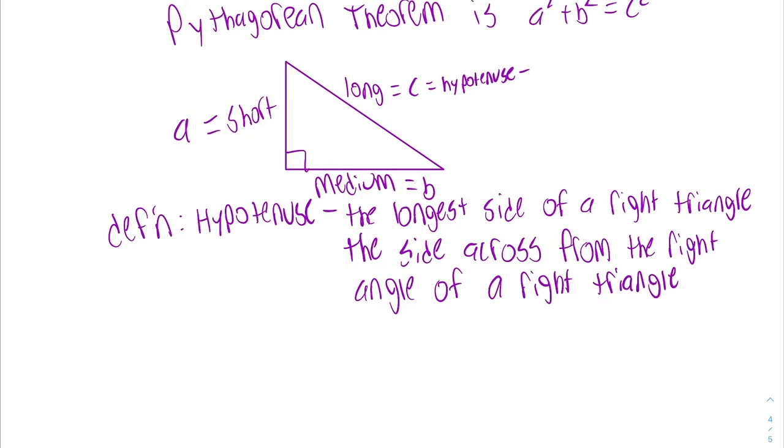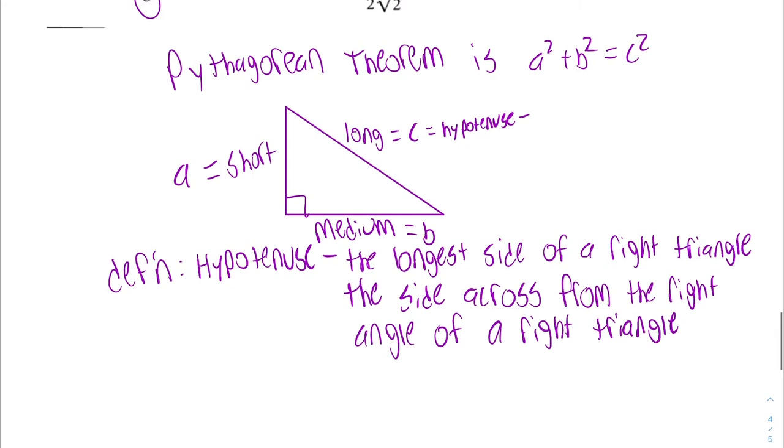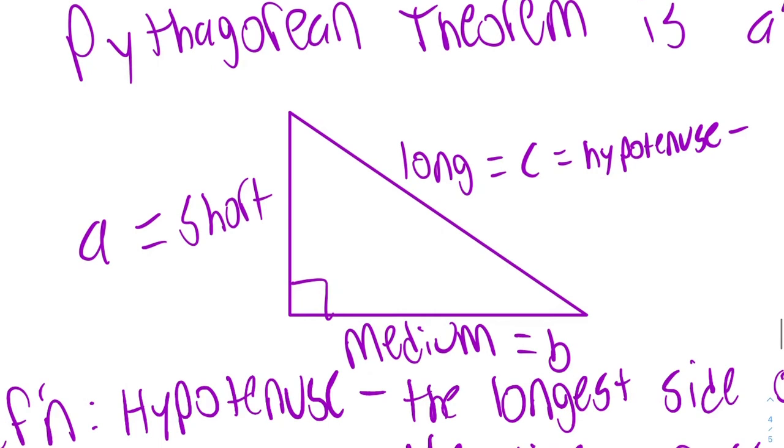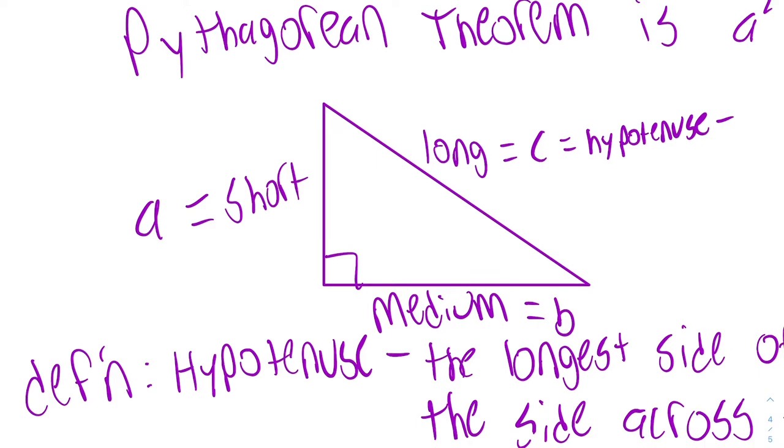I keep on saying the word right triangle because this formula and these rules only work with right triangles. If you have a triangle that's different, that's not a right triangle, like if you have a triangle like that where it has an obtuse angle, then that one cannot use the Pythagorean theorem's formula. So the main part is the short side can be A, the short side can be B. It doesn't matter which one's A or B, just as long as the hypotenuse is C.